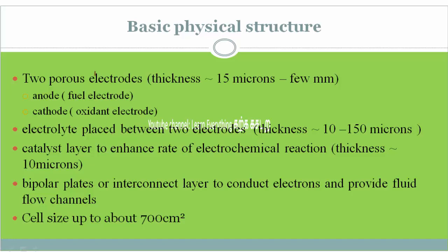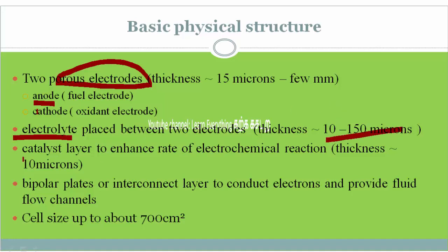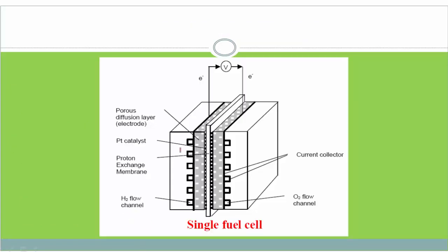The basic physical structure has two porous electrodes — anode and cathode — then an electrolyte component with a thickness of 10 to 150 microns, then a catalyst layer to enhance the rate of electrochemical reaction, then bipolar plates, with cell size up to 700 cm². The basic components are electrode, proton exchange membrane, anode, cathode, and flow channel. The electron flow is the final output.